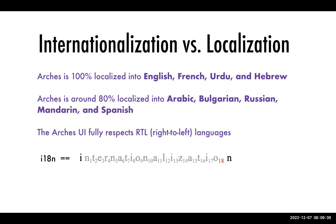You may have seen the acronym i18N — it's just a shortening of the word internationalization. Someone must have been tired of writing that long word and decided to count the 18 letters between the I and the N. You'll also come across L10N, which is just localization — same idea. There are similar abbreviations for globalization and others you'll encounter in this space.